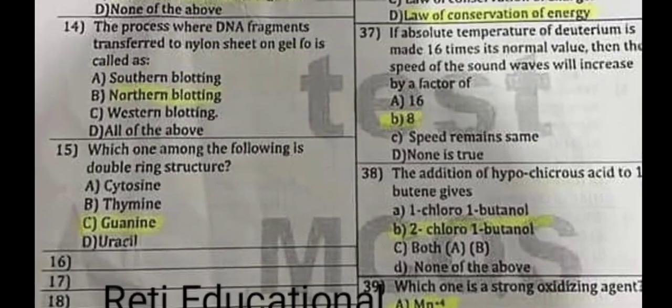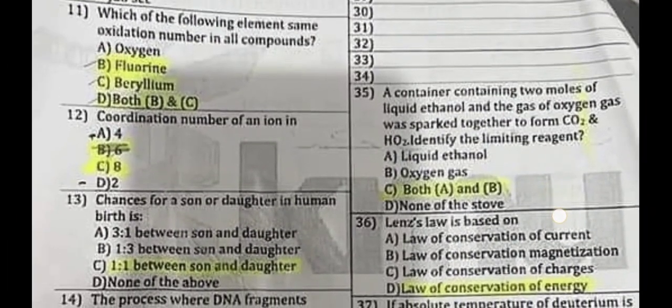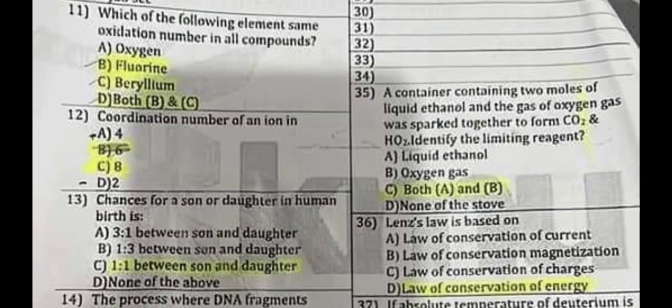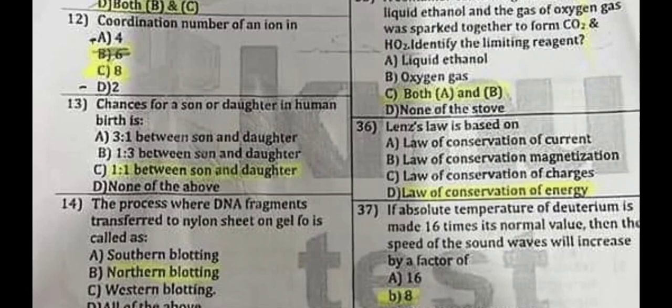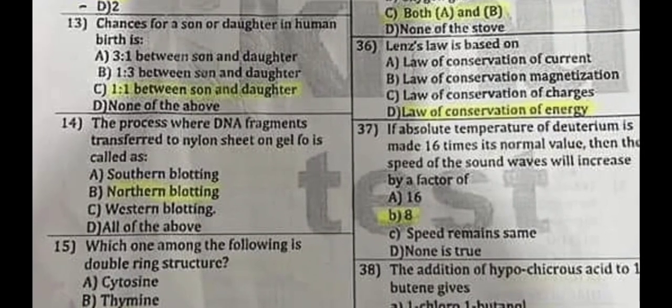Questions 16 to 34 are not given. Question number 35: A container containing two moles of liquid ethyl and oxygen gas was sparked together to form carbon dioxide and water — identify the limiting reagent. The correct answer is both A and B: liquid ethyl and oxygen gas. Question number 36: Lenz's law is based on D: the law of conservation of energy.